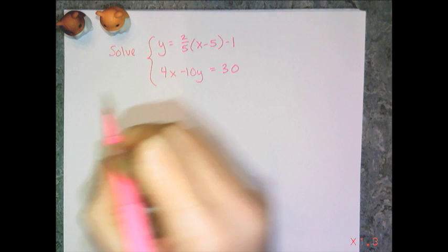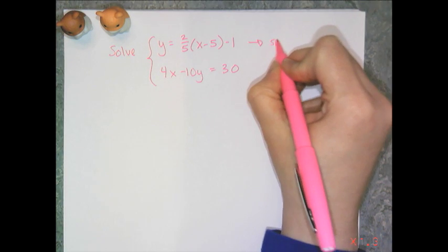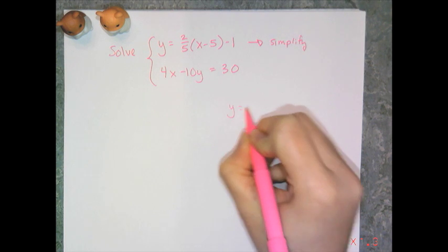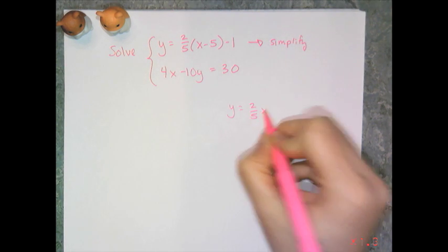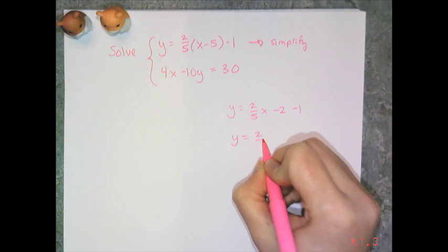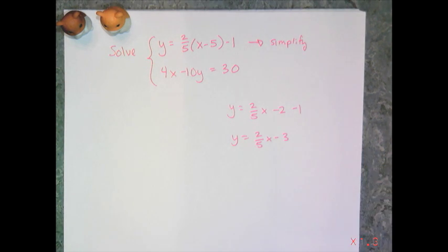I'm going to go ahead and simplify this first, because that's just gross. So let's simplify that. By distribution I get y equals 2 fifths x minus 2 minus 1, which is y equals 2 fifths x minus 3.